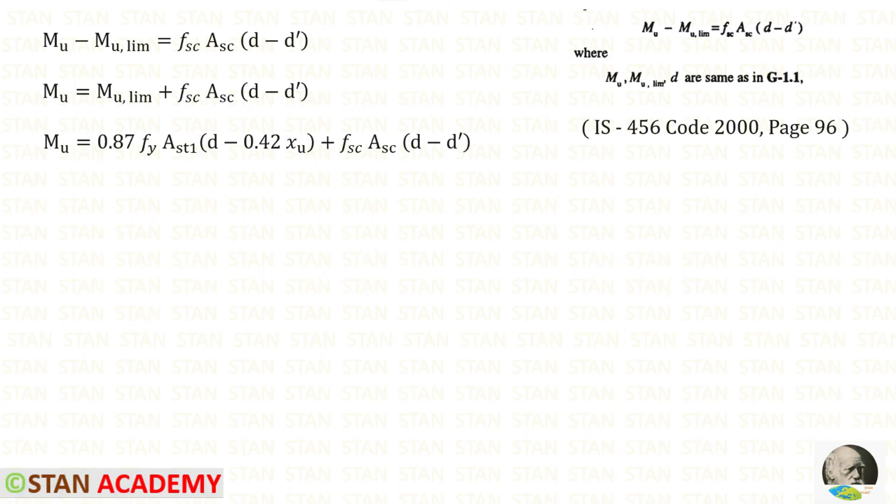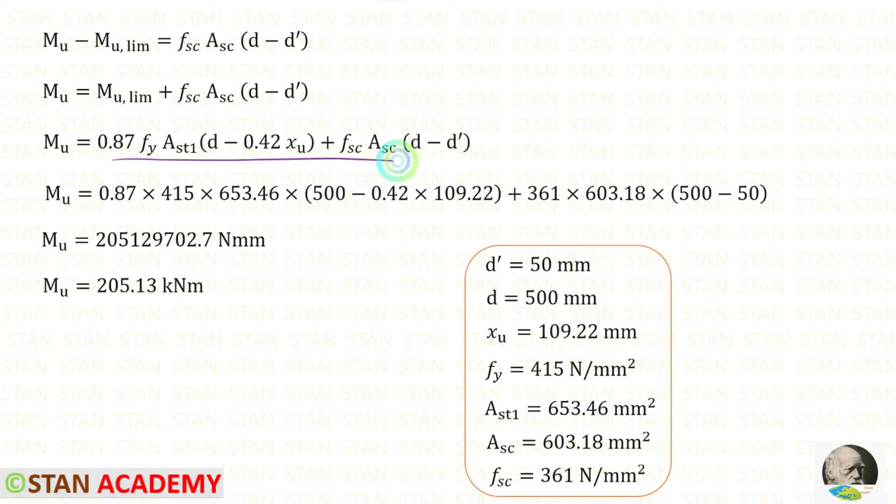But we have to find MU. From the code book we can copy this formula. We can take this term on the other side, so it will come as positive. For MU limit just before we have made an expression. We can apply that. In this one we can apply all of the values. So that we will get MU in Newton millimeter. We can divide this by 10 power 6 so that we will get the answer in kilonewton meter.